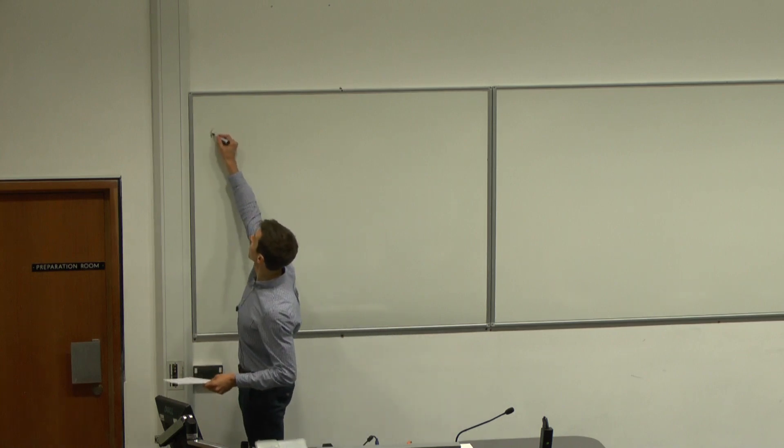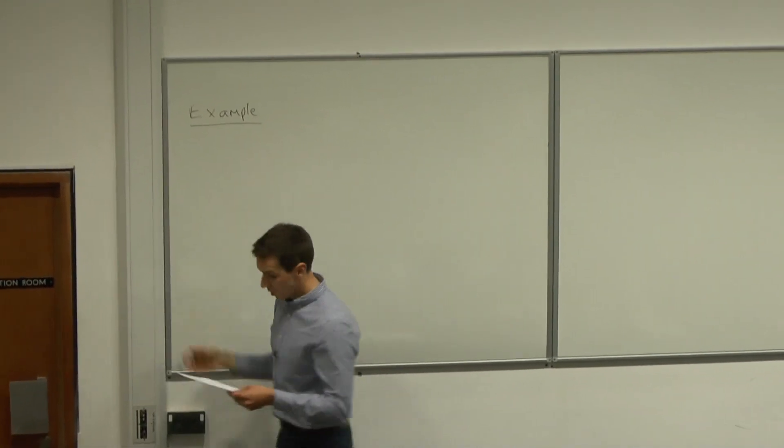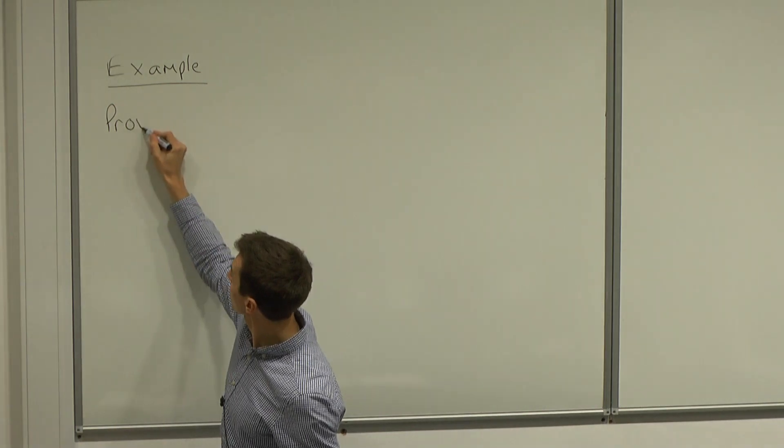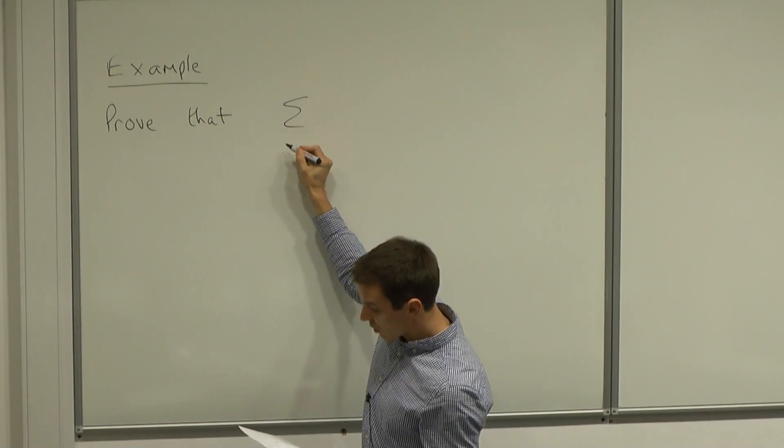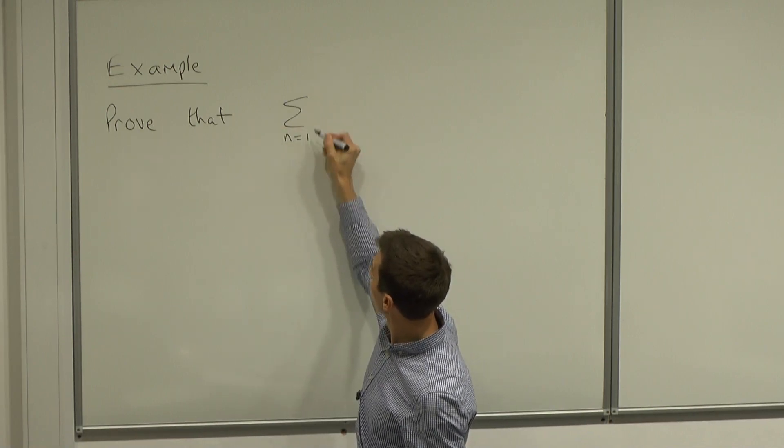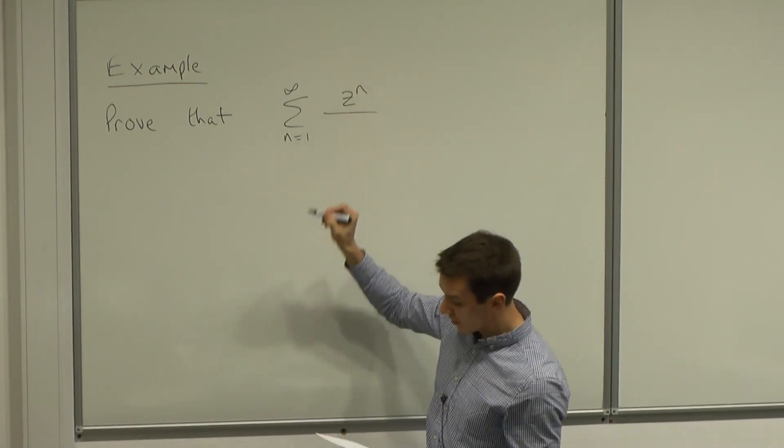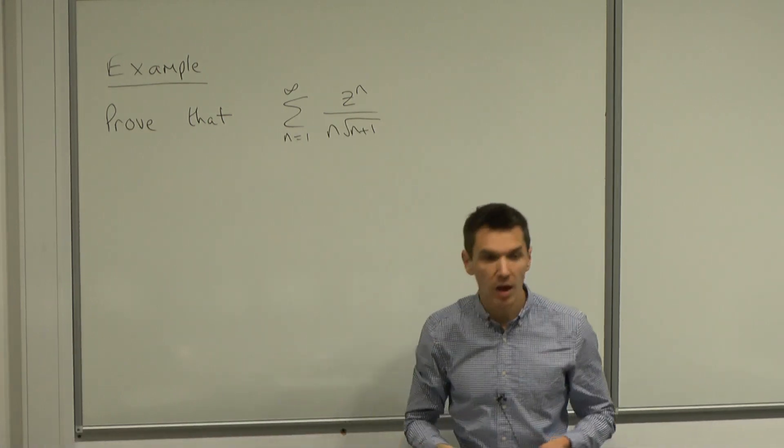And this is an important result, and basically today I want to start with an example of using Weierstrasser's M test. So let's look at an example of doing this. I want to prove that the series where we sum from 1 to infinity of z to the n over n into square root of n plus 1,